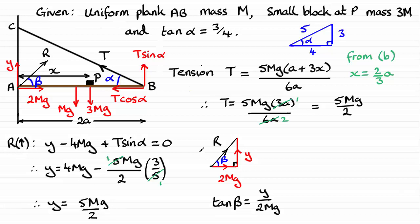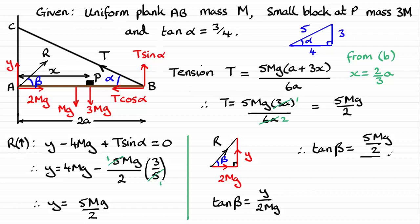Now we move on to working out what tan beta is. We've seen that it's Y over 2mg. So therefore, tan of beta is going to be equal to our Y value, 5mg over 2, all divided by 2mg. Those mg's cancel one another out, and you're just left with 5 over 2 divided by 2. And that's going to leave you with 5 over 4. There's your answer.